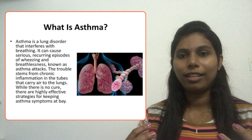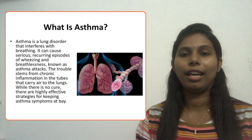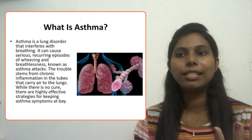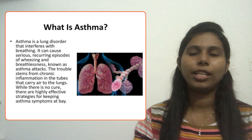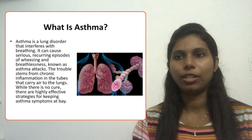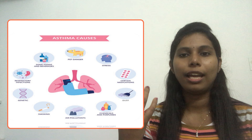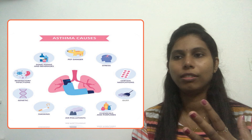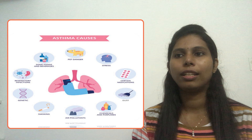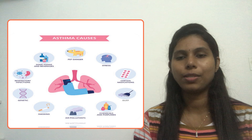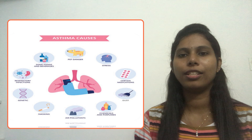Asthma is a lung disorder that interferes with breathing. Clients with asthma have wheezing and struggle to get oxygen — very difficult breathing. It can cause serious and recurring episodes of wheezing and breathlessness. The main triggering agents include pets, certain foods and beverages, respiratory infections, genetics, smoking, air pollution, chemicals, perfumes, dust, certain medications, and stress. These are the causes or triggering agents that can exacerbate asthmatic attacks.